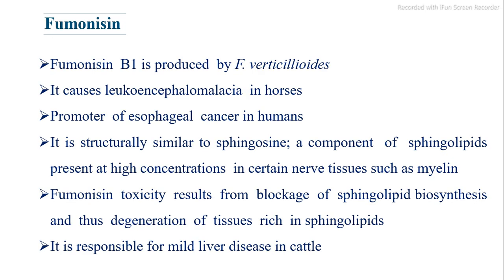Fumonisin B1 is produced by Fusarium verticillioides. It causes leukoencephalomalacia in horses and is a promoter of esophageal cancer in humans. It is structurally similar to sphingosine, a component of sphingolipids present at high concentrations in certain nerve tissues such as myelin. Fumonisin toxicity results from blockage of sphingolipid biosynthesis and degeneration of tissues rich in sphingolipids. It is responsible for mild liver disease in cattle.